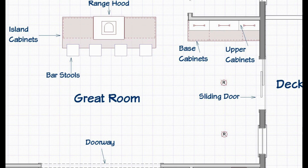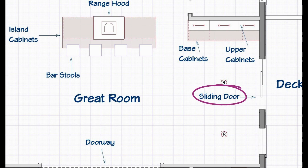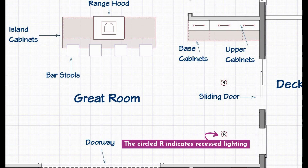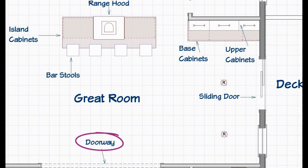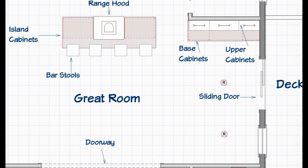Over on the right side, we've got the base cabinets and the upper cabinets called out. Further to the right, we see a deck, which is outside of those sliding patio doors that lead from the great room to outside to our deck. At the very bottom is a doorway symbol — a doorway just means there's no door there; it's just an open spot in the wall that allows you to walk from one area to another without an actual door. It's just the doorway. That is what the bottom side of the floor plan looks like.